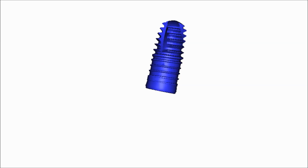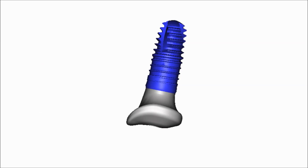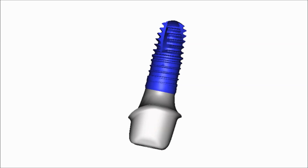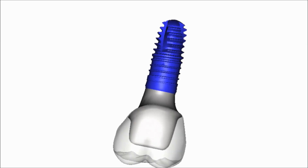Basically, once my implant is placed, at the time of surgery I can place a custom healing abutment with a predefined emergence and allow that tissue to form and heal, and then I can simply remove that custom healing abutment and replace it with a final abutment that follows the same tissue contours with really no change in pressure or change in contour to the tissue, and then we can have a final crown placed on top of that.